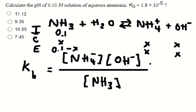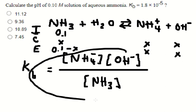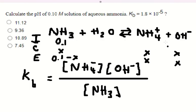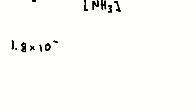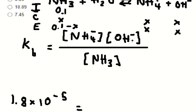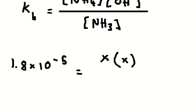And now we put this value in here. So Kb we have 1.8 multiply by 10 to the power of negative five. So this one we have S and S and 0.1 minus S, I will put in here.